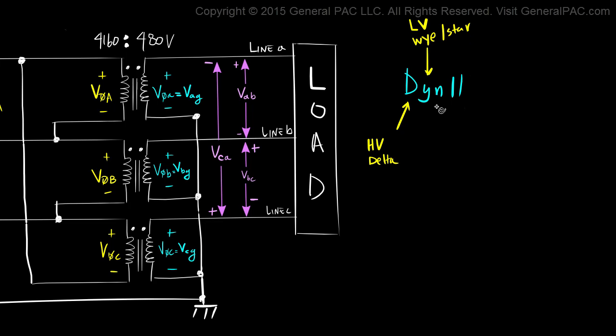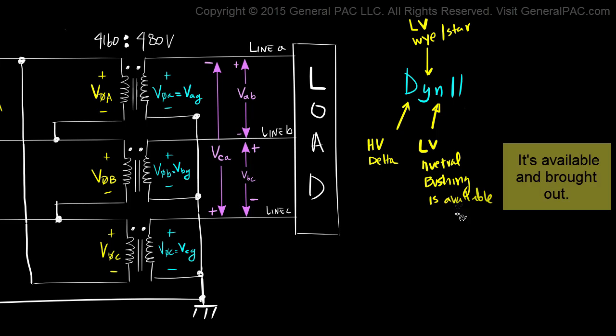Because the N comes directly after the Y, the N tells us that the low voltage windings neutral bushing is available. Now, the low voltage neutral bushing is available but that doesn't mean that the neutral bushing is actually grounded.